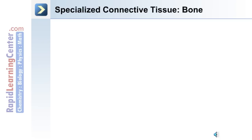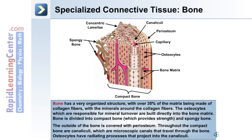Let's take a look at bone structure in more detail. Referring to the image, the outside of the compact bone is covered in periosteum. The interior is spongy bone. The osteocytes, or bone-forming cells, are built directly into the matrix. 30% of bone matrix is made of collagen fibers, with minerals around those collagen fibers. The osteocytes, which are responsible for mineral turnover, are built directly into the matrix.